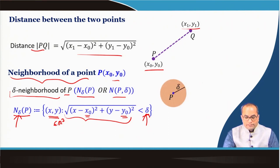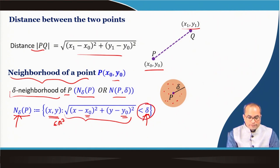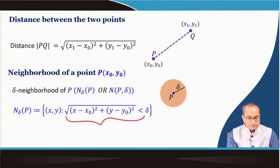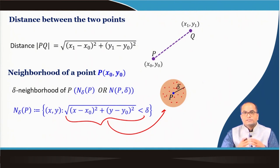Suppose this is the point p with radius delta — this open disk forms the delta-neighborhood. The boundary is not included because we have strict inequality (less than delta, not less than or equal to). So the circle of radius delta is not included in the neighborhood — only interior points are included. All points whose distance from p is less than delta form this neighborhood.